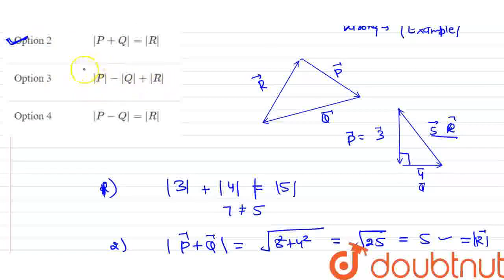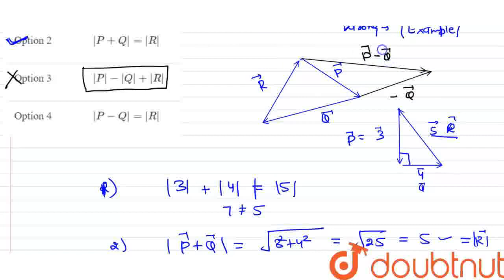Now option three says P minus Q vector equals R vector. Let's check this statement. And option four says P vector minus Q vector equals R vector. With P vector minus Q vector, the Q vector is in negative direction. P vector minus Q vector magnitude is not equal to R vector magnitude because P vector and Q vector are different.